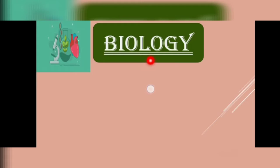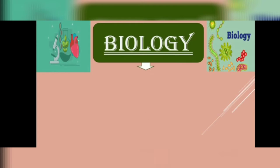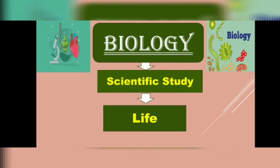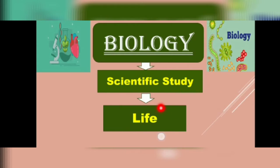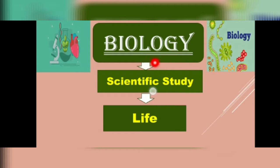Biology is basically derived from two Greek words. The first word is 'bio', meaning life, and the second word is 'logos', meaning thought and reasoning. So we can define biology as the scientific study of life. When you study about life processes occurring inside living organisms — for example, photosynthesis, respiration, excretion, movement — it will be included in biology.